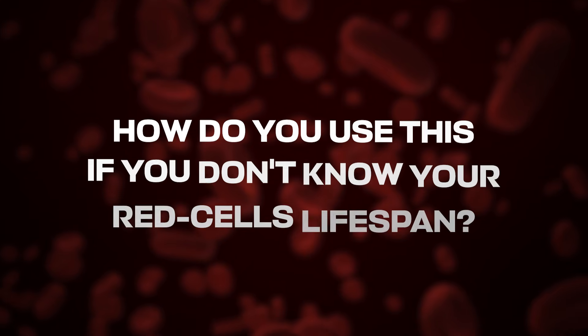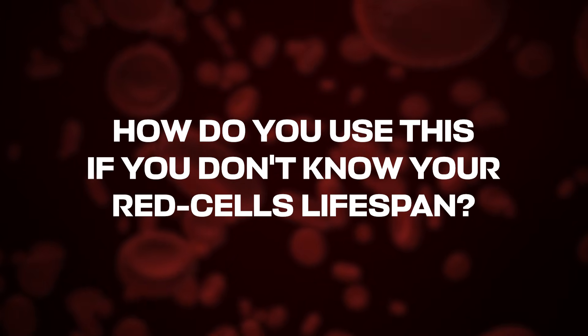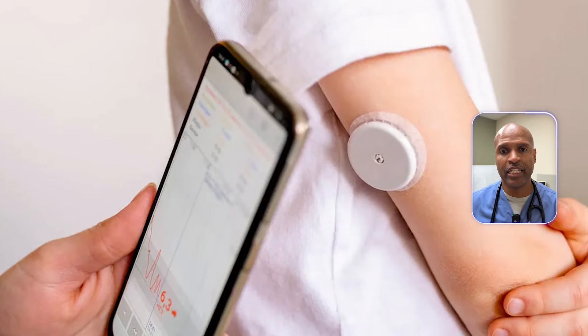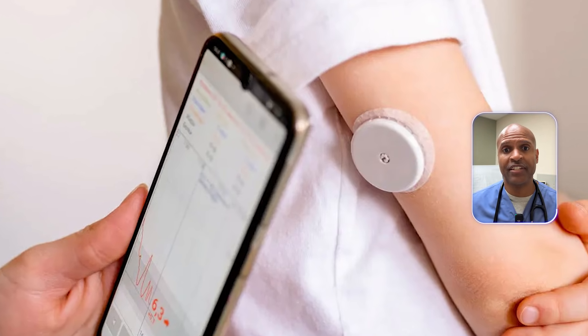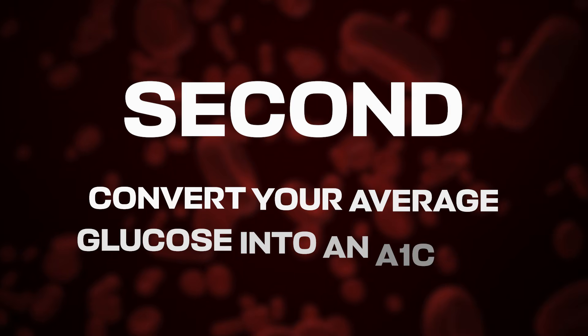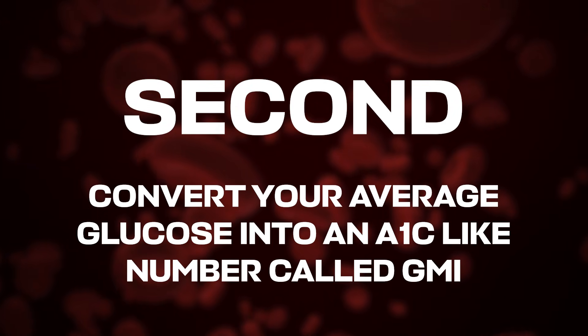Let's bring this back to your real life. How do you use this if you don't know your red cell lifespan? Most people don't. Here's the practical path. First, anchor in reality — your daily glucose. If you wear a CGM, look at your mean glucose and time in range. If you use a meter, pull a solid two weeks of readings. Second, convert your average glucose into an A1C-like number called GMI. Your CGM app often does this automatically.